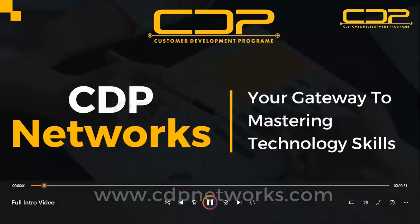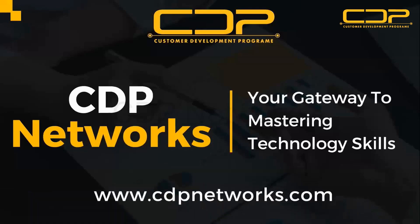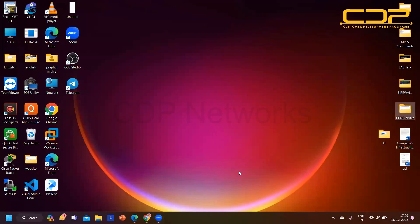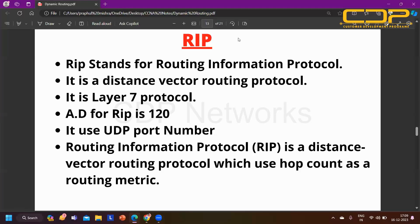Hello everyone, good evening. Today we are going to learn RIP routing protocol - Routing Information Protocol. It is an application layer protocol used to exchange routing tables between routers. As I mentioned, in dynamic routing, routers can exchange their routing tables dynamically, because implementing static routing in large networks is very complicated. That's why we use dynamic routing, and the first dynamic routing protocol is RIP.